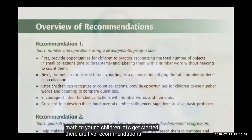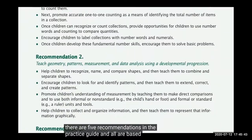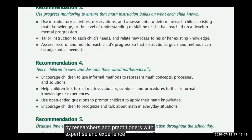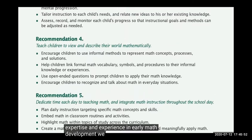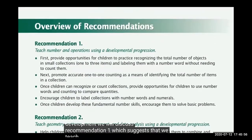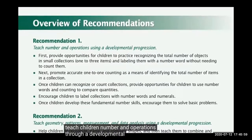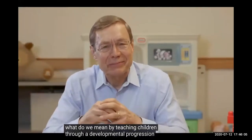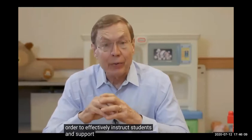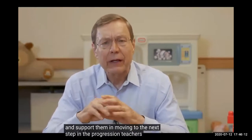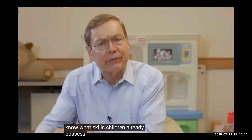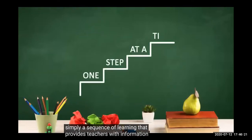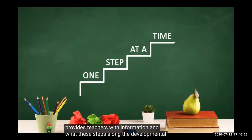There are five recommendations in the practice guide, all based on a systematic review of research conducted by researchers and practitioners with expertise and experience in early math development. We will discuss recommendation one, which suggests that we teach children number and operations through a developmental progression. In order to effectively instruct students and support them in moving to the next step, teachers must know what skills children already possess. A developmental progression is simply a sequence of learning that provides teachers with information on what these steps along the developmental path are.